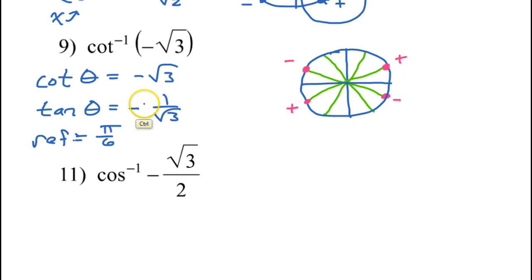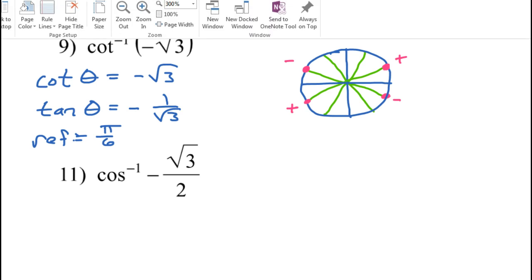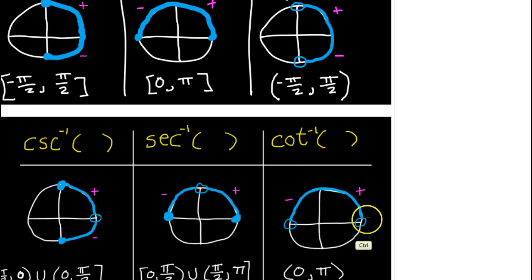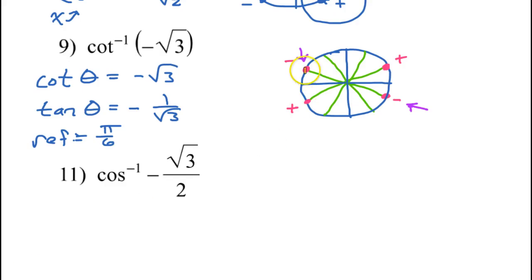We want tangent to be negative, so that means we're going to choose one of these two — either this one or this one. It's got to be one of the negative ones. But which one? That's where the restrictions come in. Inverse cotangent is only defined for the top half of the unit circle. That's why we have to pick this one, because it's in the top half of the unit circle. So the final answer is 5 pi over 6.